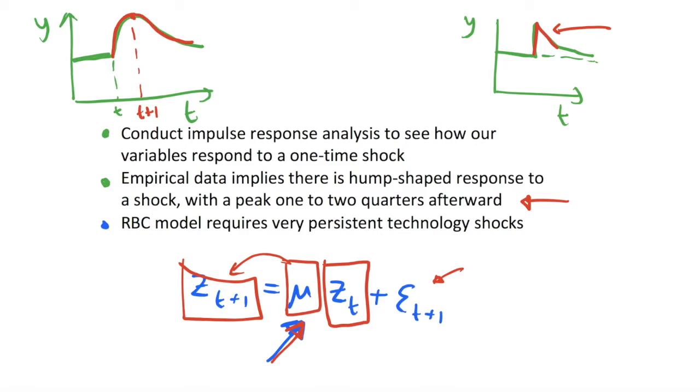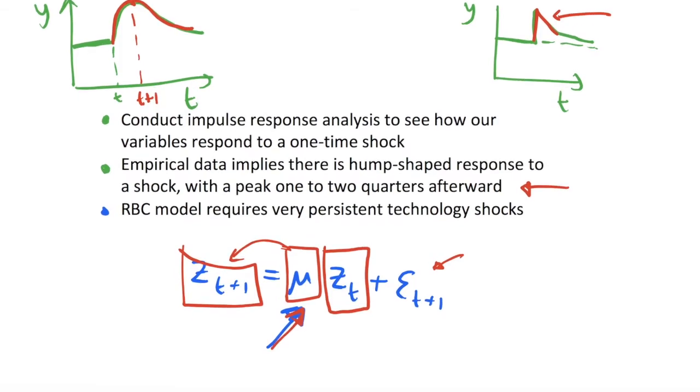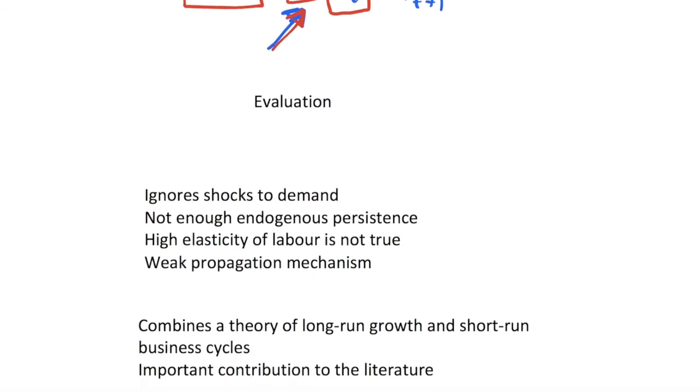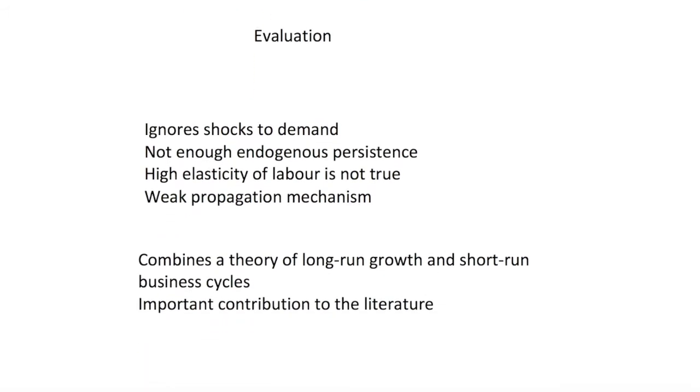We require very persistent technological shocks for our impulse response analysis to match up with the data, and there isn't really a lot of evidence to suggest that this is true in the data - that technology shocks do persist for a long time. So this is an issue with the RBC models as well, that we don't have enough endogenous persistence and we rely heavily on exogenous persistence of technology.